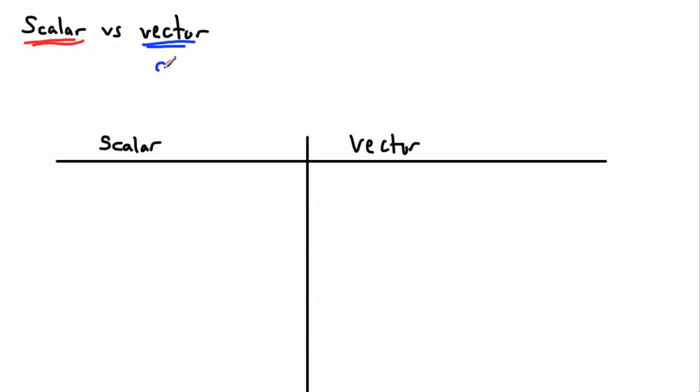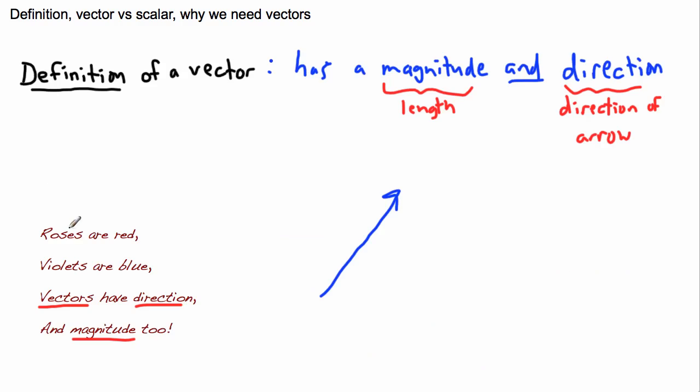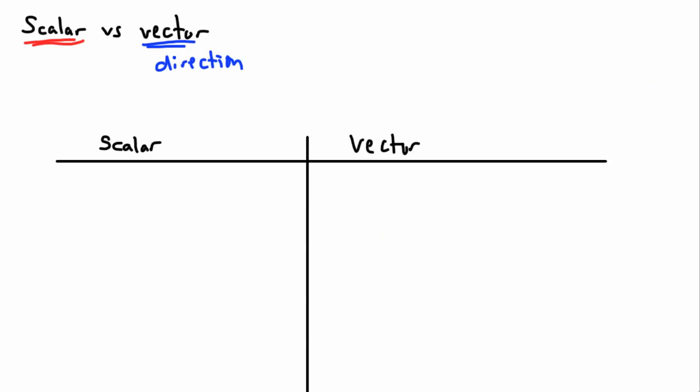Remember that a vector has direction and magnitude, just like that really awesome poem that I showed you. Roses are red, violets are blue, vectors have direction and magnitude too. So they're arrows. So because of that, we can take a look at this. So vectors have direction and magnitude. In other words, they have a length, and they also need to have a direction. Direction matters when you talk about vectors.